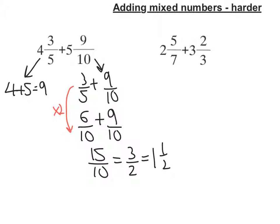So what I've got now is I've got my 9, and I've got my 1 and 1 half. So 9 plus 1 and 1 half will give me 10 and 1 half, and that's my answer.